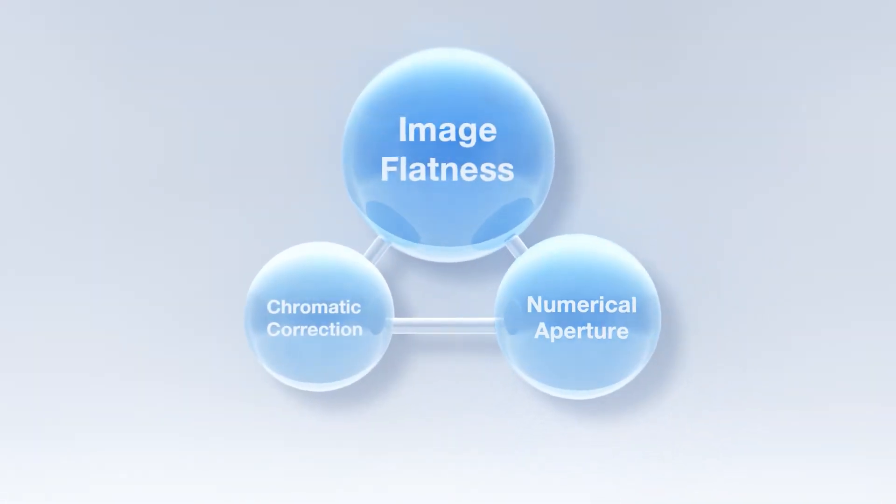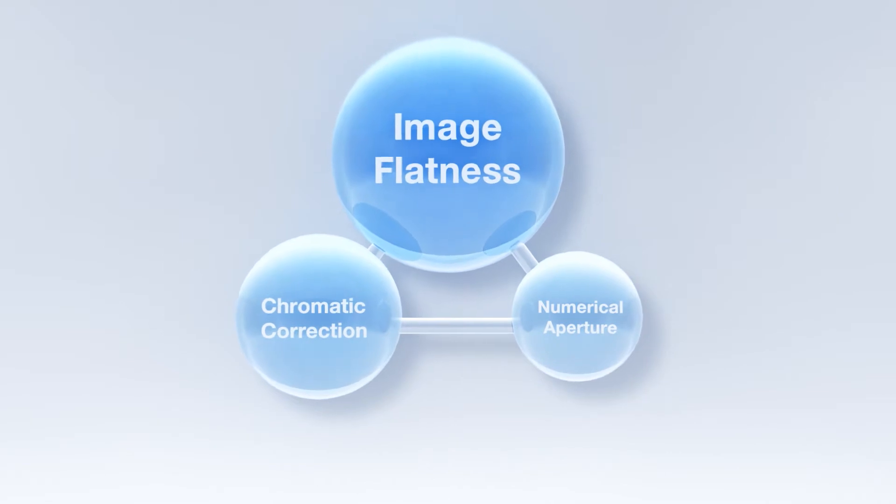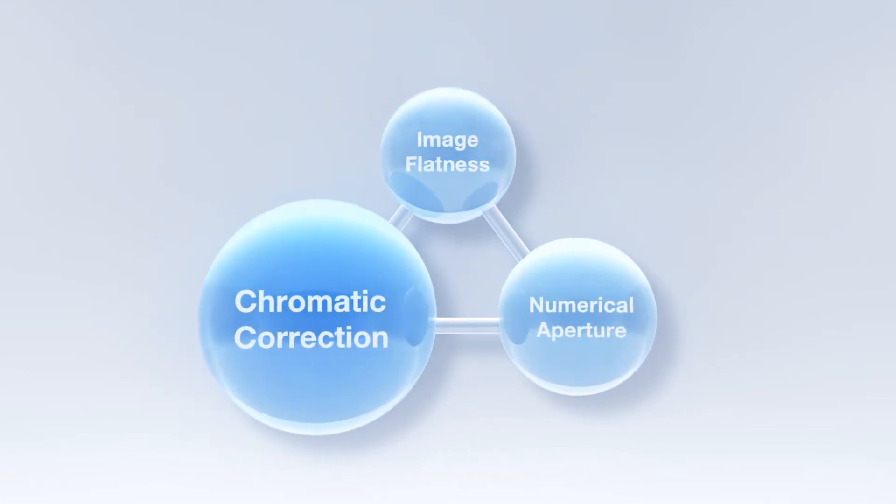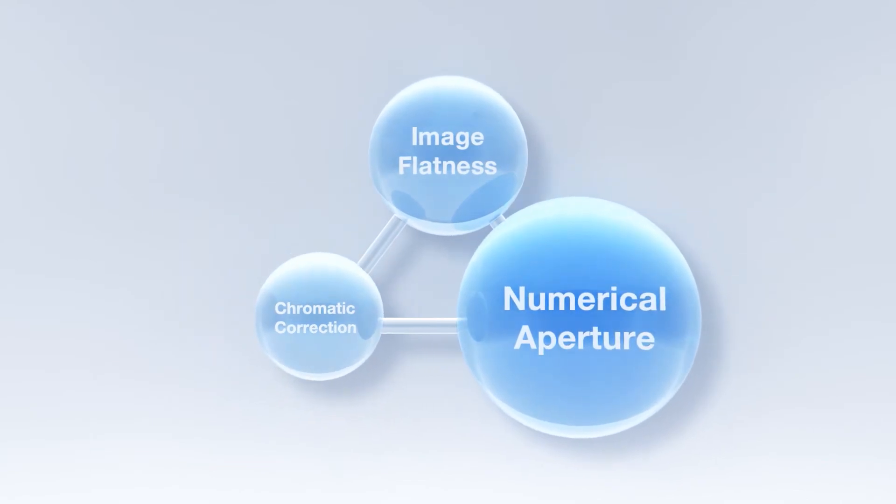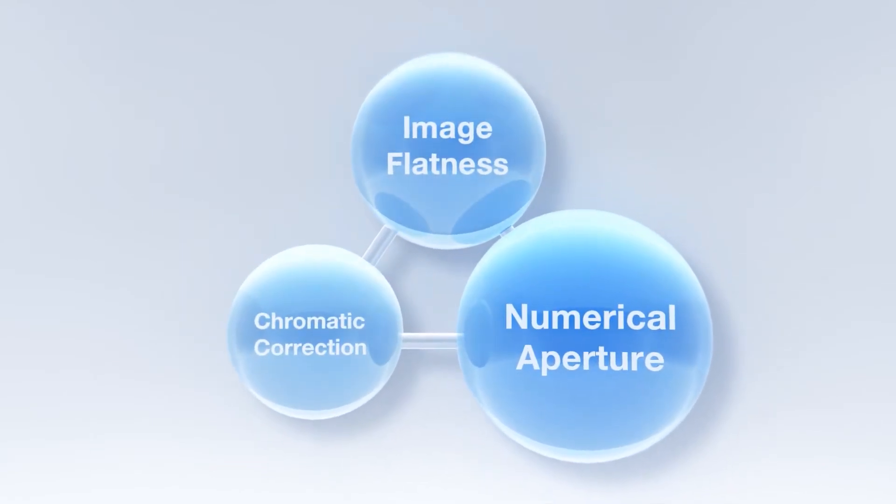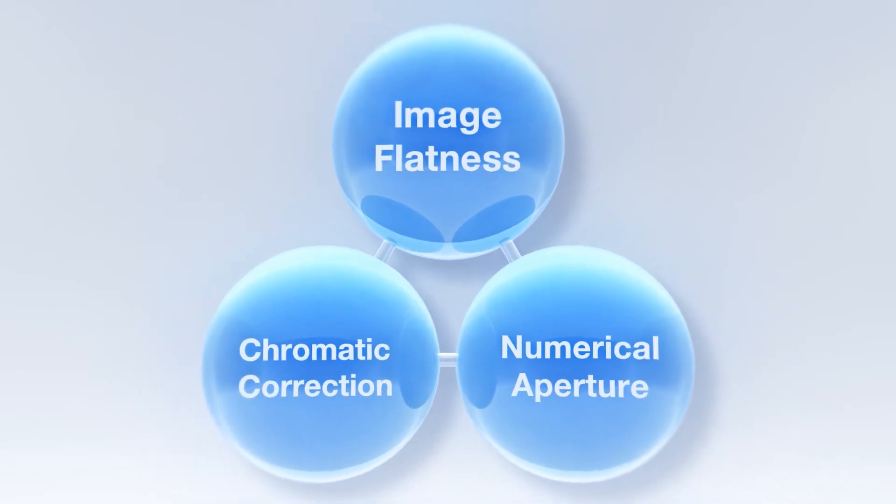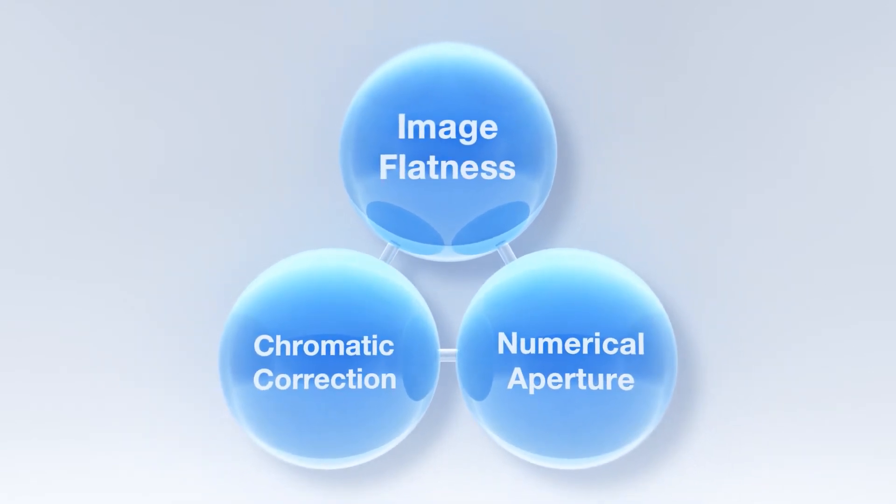Conventional objectives cannot correct for all three attributes due to technical barriers that force a trade-off between flatness, chromatic correction, and numerical aperture. Our innovative manufacturing technology has broken this barrier, enabling X-Line objectives to deliver improvements in all three at the same time.